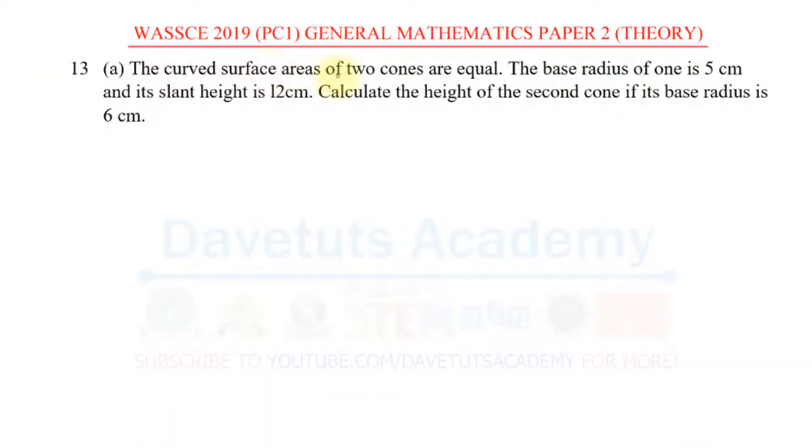The curved surface areas of two cones are equal, the base radius of one is 5 cm and the slant height is 12 cm. We are to calculate the height of the second cone if its base radius is 6 cm.